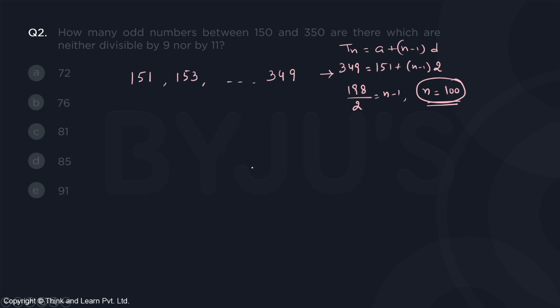In an exam, you should make it a habit that rather than doing this whole process, we should just be doing this minus this divided by the common difference plus 1. So 349 minus 151 divided by the common difference which is 2 plus 1. That's just a fast way of doing this.